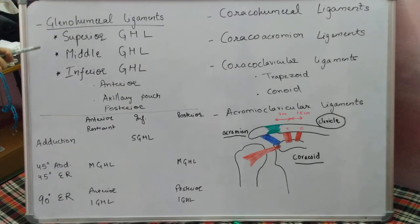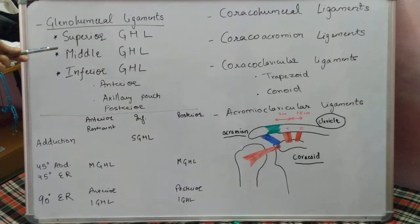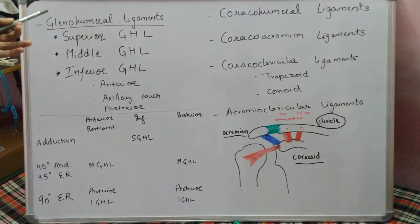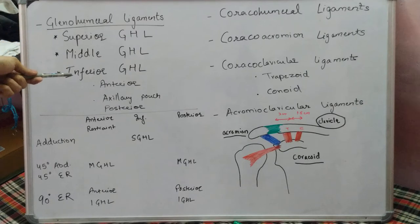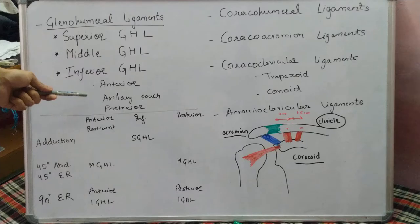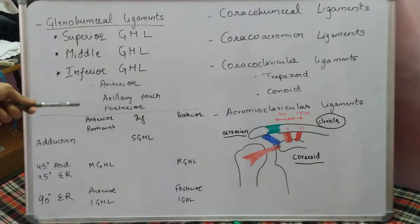We have three types of glenohumeral ligament: superior, middle, and inferior, depending upon their point of origin from the glenoid. The inferior glenohumeral ligament is further divided into three parts: the anterior part, the axillary pouch, and the posterior part.